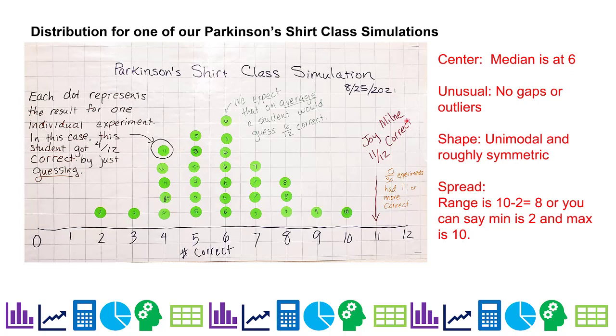It's unimodal, we just have one peak. It's roughly symmetric. It doesn't have to be perfectly symmetric. My range is from 2 to 10, which is 8. You can also say the minimum is 2 and the maximum is 10. But later we're going to get into more sophisticated measures of spread.